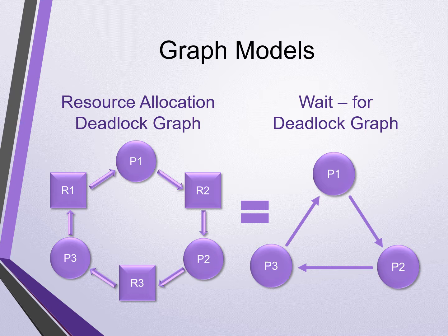Also notice that the resource allocation graph is similar to the deadlock dependency graph as introduced in our lecture six notes, where the processes are considered thread vertices and resources lock vertices. Let's look at the wait-for graph, which is an easier way to show the same thing. In this graph, the processes are considered nodes, and the arrows indicating pending requests or assignments are considered edges. This graph simply reads: P1 is waiting for P2, which in turn is waiting for P3, which is waiting for P1. Again, this completes a cycle or circular wait and demonstrates the same deadlock as before.